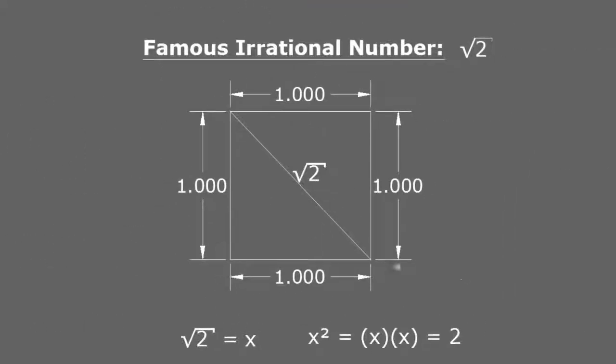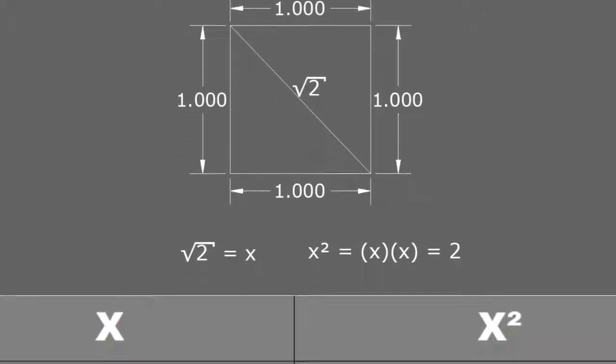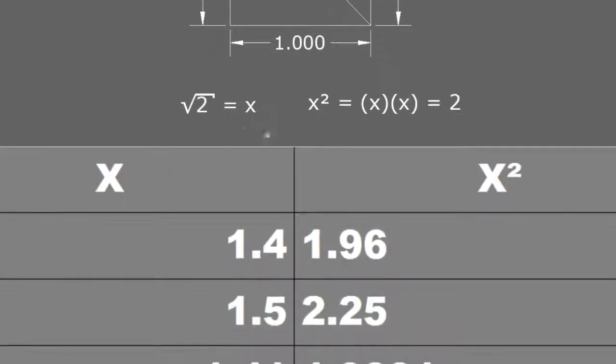One very famous, commonly known irrational number is the square root of 2. If you draw a perfect square with each side measuring 1 and measure the diagonal, that diagonal will be the square root of 2 — which you can calculate using the Pythagorean theorem. When we talk about the square root of 2, we are saying there is a number x that, when squared, equals 2. For example, the square root of 4 is 2 because 2 times 2 equals 4. So there should be a number x where x times x equals 2 — but let's see what happens when we try to find it.